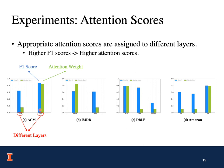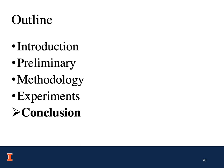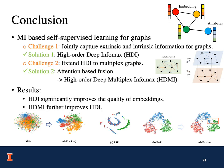In conclusion, we propose a novel mutual information-based self-supervised learning for graphs. The first challenge is how to jointly capture extrinsic and intrinsic information, and our solution is the high-order deep infomax, HDI for short. The second challenge is how to extend HDI to multiplex graphs; we propose a novel attention-based fusion model, and the full model is called the high-order deep multiplex infomax, HDMI for short. The experimental results show that HDMI significantly improves the quality of node embeddings, and HDMI further improves HDI on the multiplex graph. Thank you.